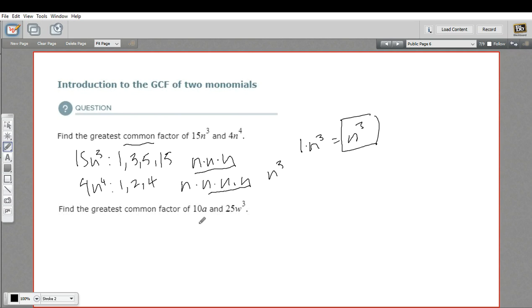Let's try another one. Here we have 10a and 25w to the third. So let's go ahead and list out those factors. Let's see the number part. The factors of 10 are 1 and 10, and 2 and 5. I think that's it. And then a, well, we just have a.